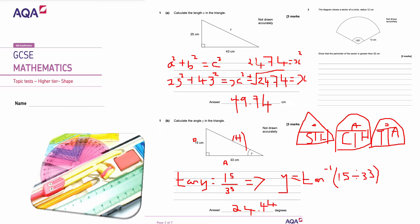This is question number two. The diagram shows the sector of a circle radius 12 centimeters. Show that the perimeter of the sector is greater than 52 centimeters. Well, this is going to be 12 centimeters, and then I've got to work out the arc length. The arc length is given by the formula: the angle divided by 360 times by the circumference, because it's part of a circle. So it's 135 over 360 times 2 times pi times the radius, which in this case is 12.